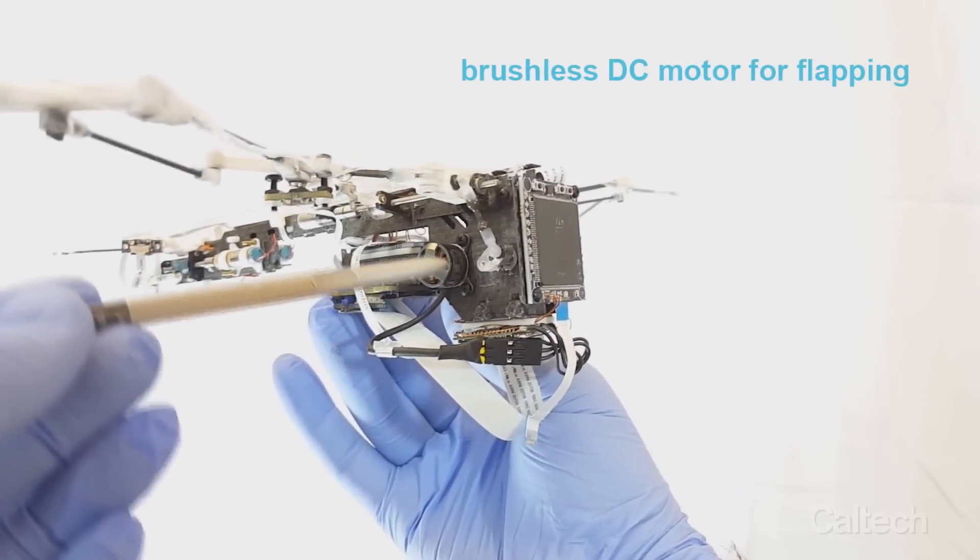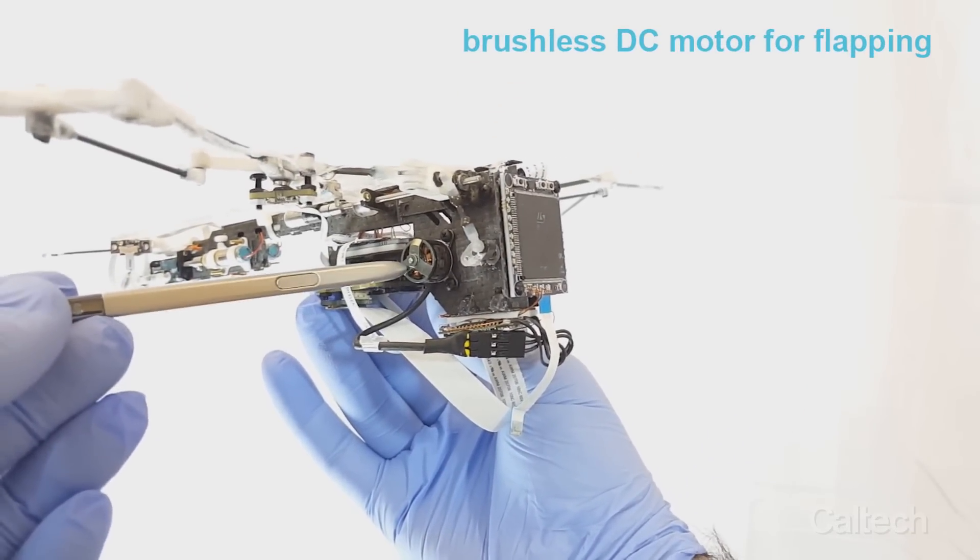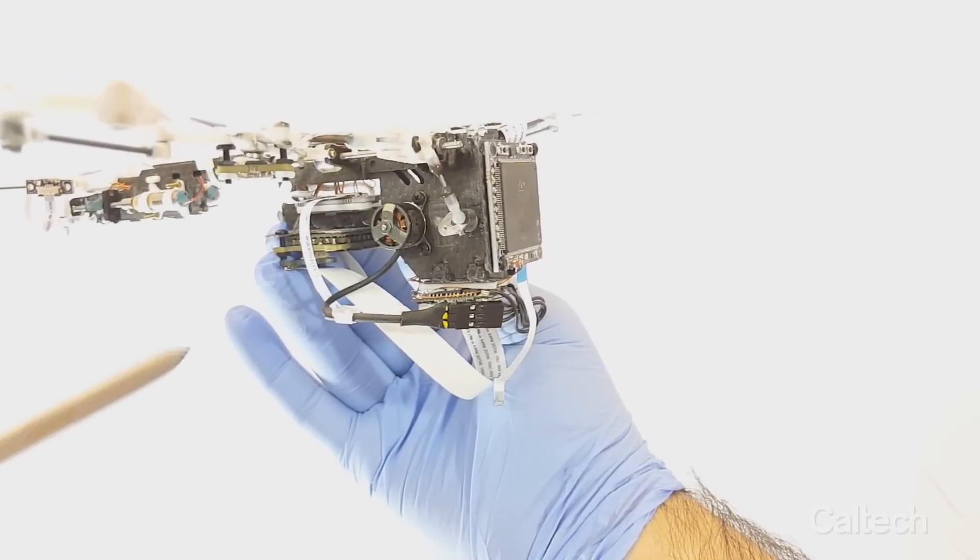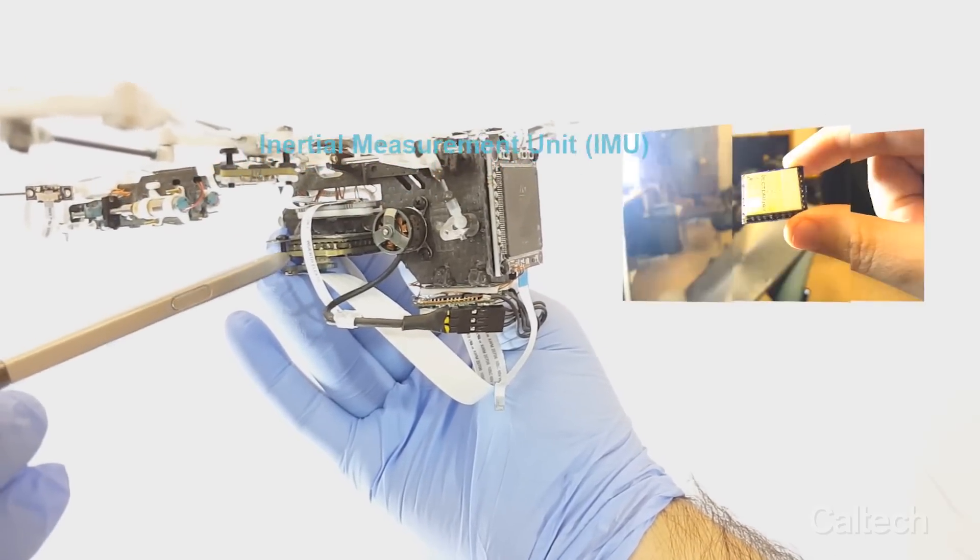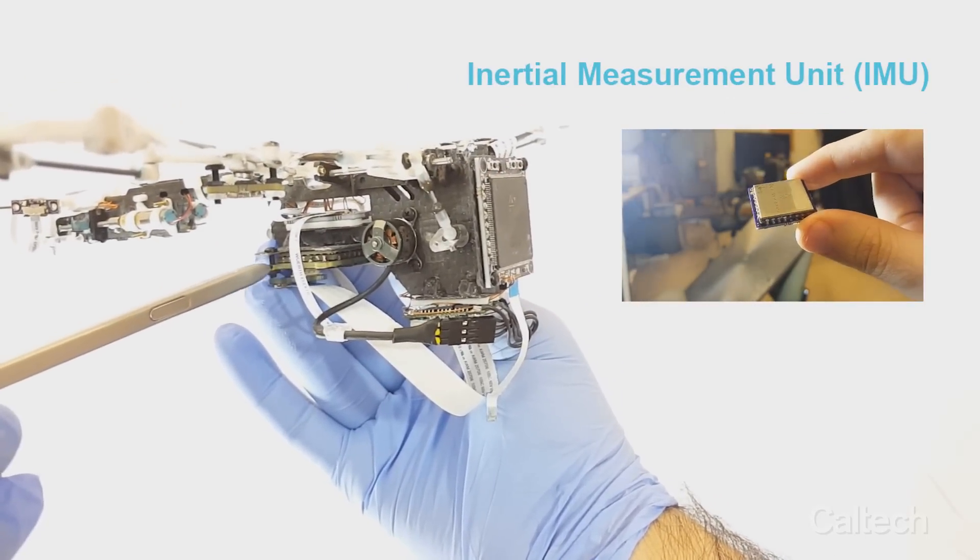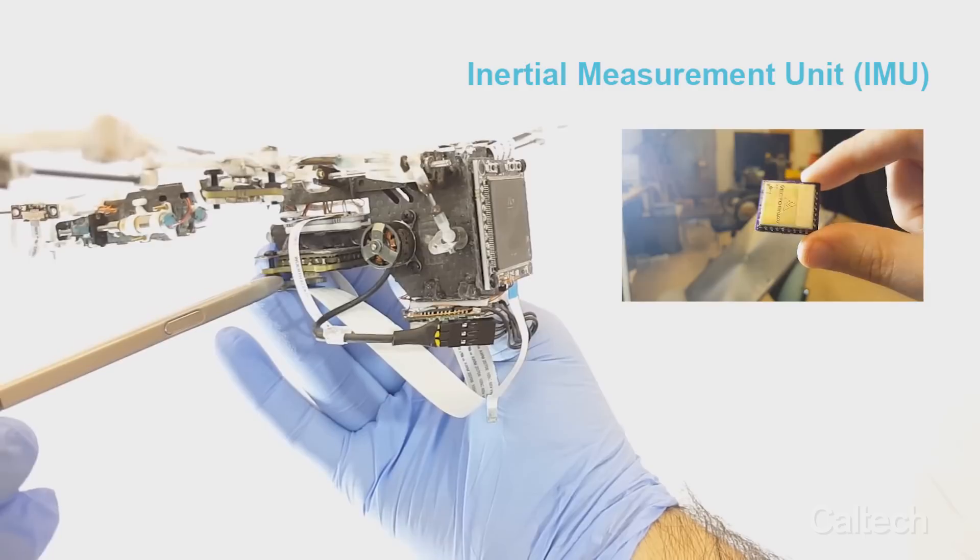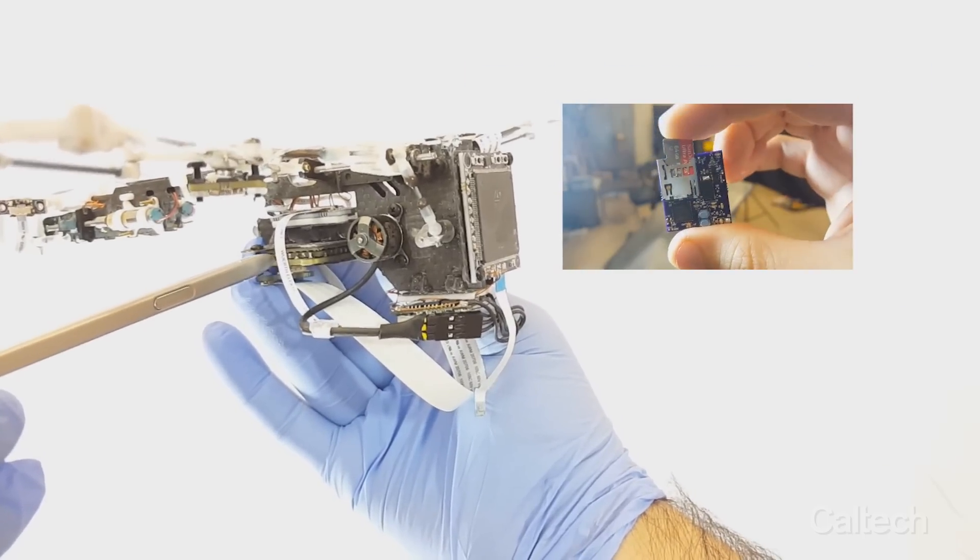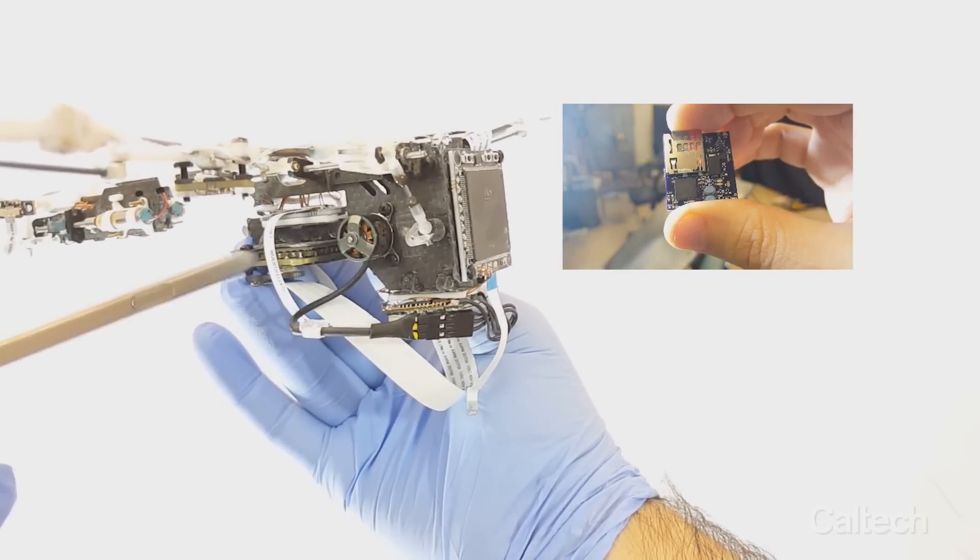The brushless DC motor drives a crankshaft mechanism. A sophisticated inertial measurement unit, or IMU, measures angular rate and acceleration. The data acquisition unit records sensor data and commands the micro actuators.